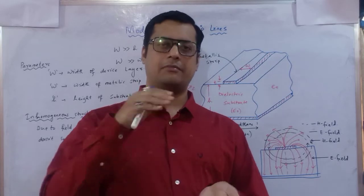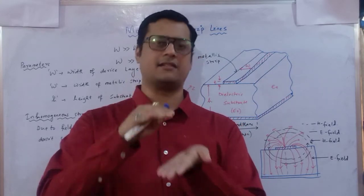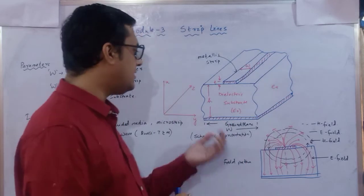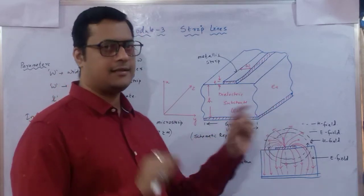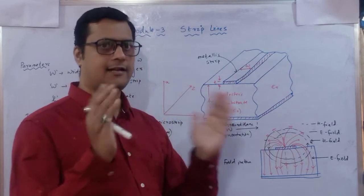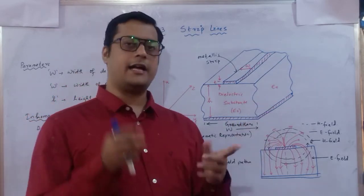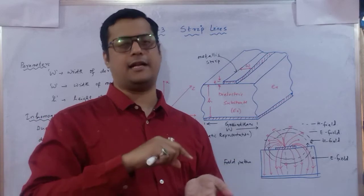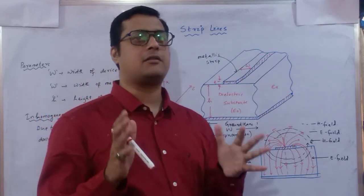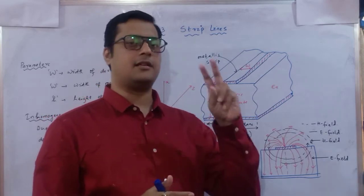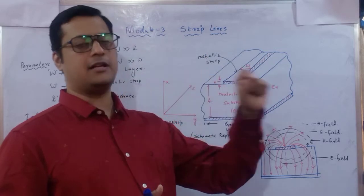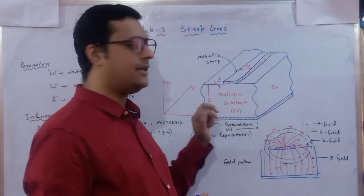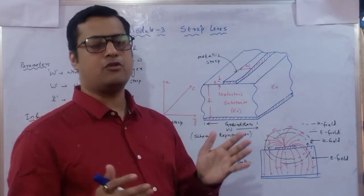The ground plane is a metallic plane above which the dielectric medium is placed at a certain thickness. Above the dielectric substrate, a small thin metallic plate is placed. This whole construction is called the microstrip line — three basic layers: the thin metallic plate on top, the substrate in the middle, and the ground plate at the bottom.